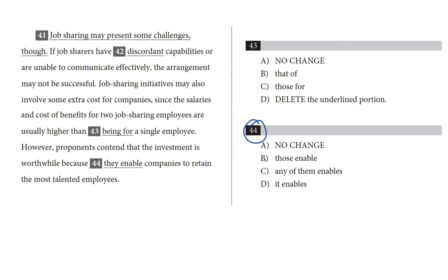Let's take a look at our choices. We've got A, no change — so 'they enable.' B, 'those enable.' C, 'any of them enables.' And D, 'it enables.'